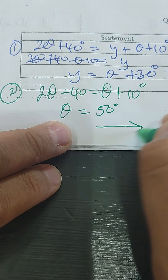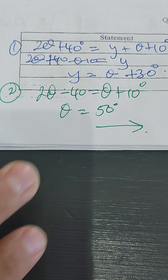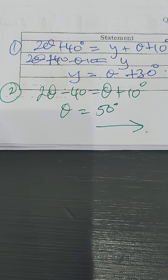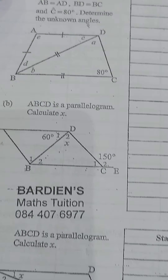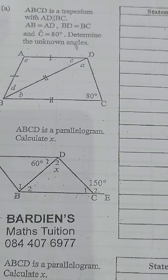Alternate angles with TP being parallel to QR. So theta is equal to 50 degrees. That's really simple. Let's go to exercise three on page 10 now.